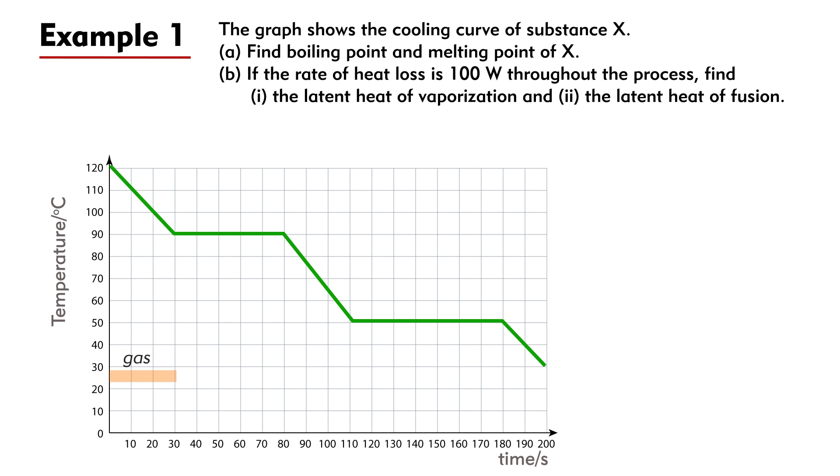Solution. The object is a gas between T = 0 and T = 30 seconds. It condenses between T = 30 seconds and T = 80 seconds. It is a liquid between T = 80 seconds and T = 110 seconds. It freezes between T = 110 seconds and 180 seconds. Afterwards, it is a solid. Therefore, the boiling point of X is 90 degrees Celsius and the melting point is 50 degrees Celsius.